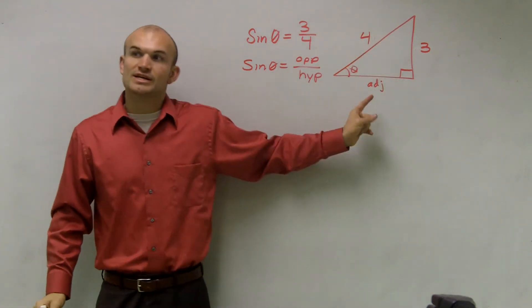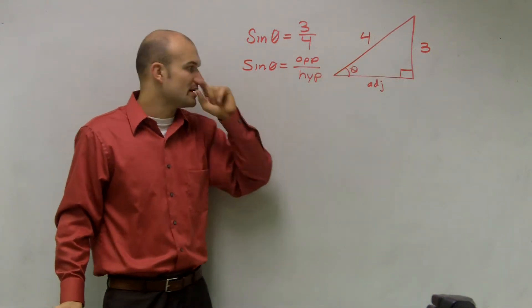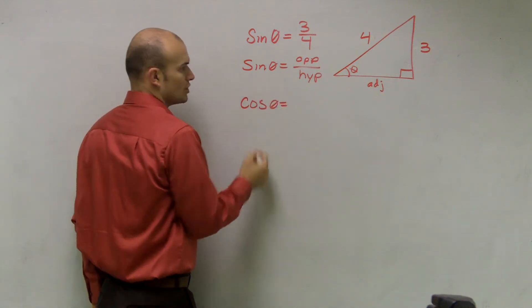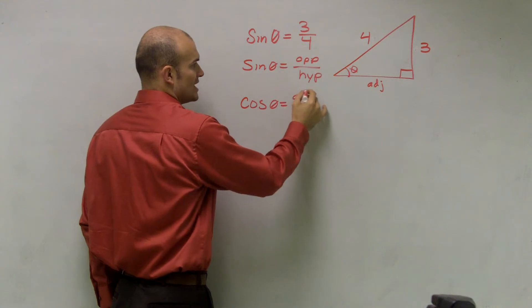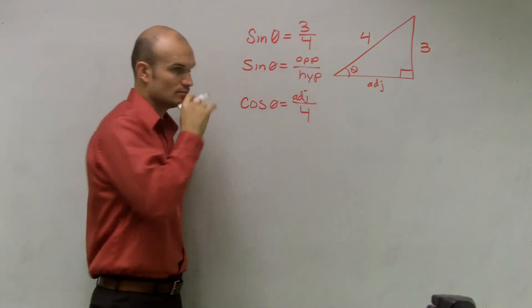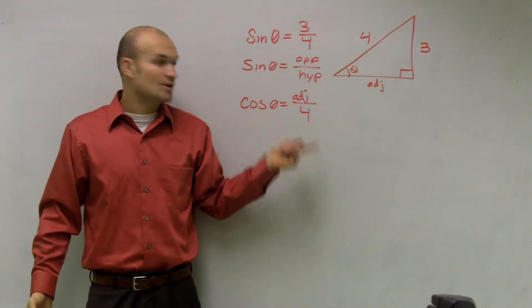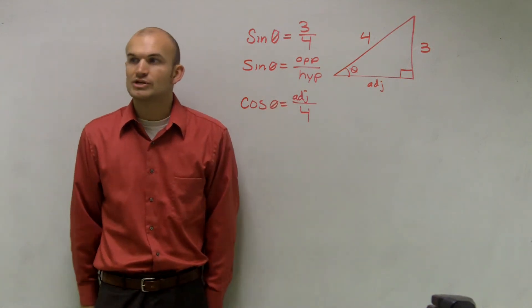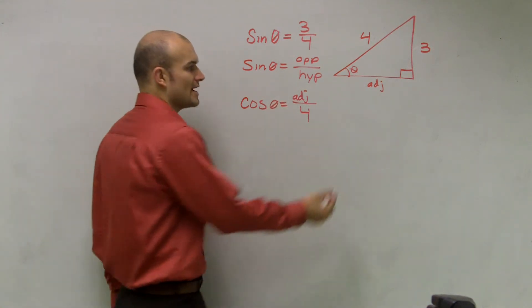So I do not know what my adjacent side is. And if you think about that, if I want to find out what is cosine, well, cosine of theta is going to be adjacent over four, because four is my hypotenuse. So I need to figure out what adjacent is going to be. Well, we can go back to our geometry days, and remember, to do that, we can use Pythagorean theorem.